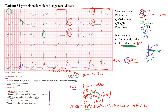The P wave axis is between 0 and positive 75 degrees — upright P waves in leads I and II, inverted in AVR, and upright in the lateral leads and AVF. All P waves have the same morphology, confirming sinus rhythm. This gives us sinus bradycardia: a sinus rhythm with a rate less than 60 beats per minute. Combined with end-stage renal disease, this should raise the suspicion for hyperkalemia.